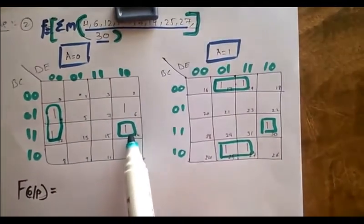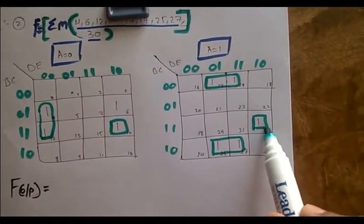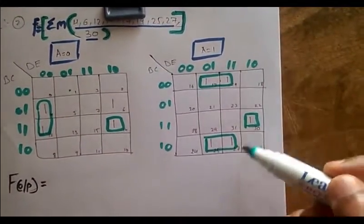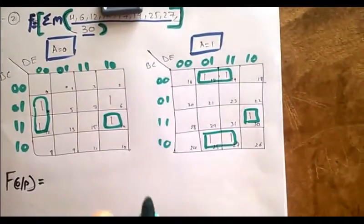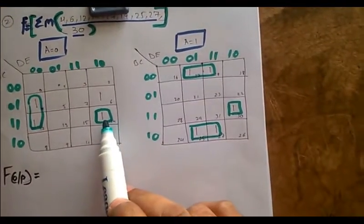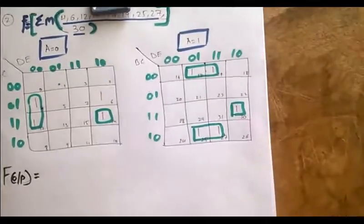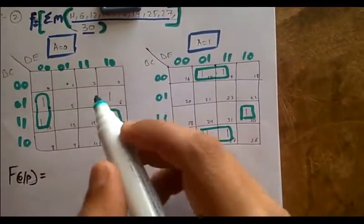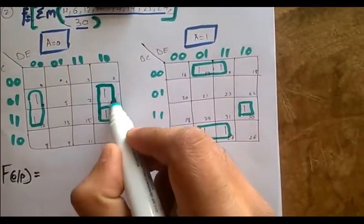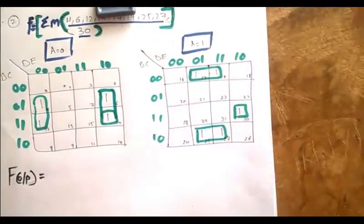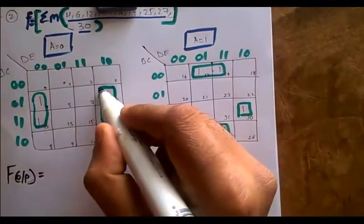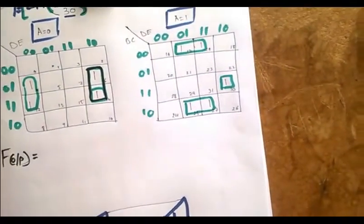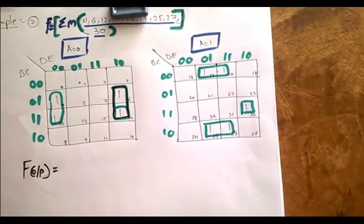See here, 14 and 30 we have paired, right? Usually what we do, we leave this and write the 5 variables as output. But the main advantage is, as it's considered as a cube, 14 and 30 are adjacent. So 14 and 30 are paired, and now remaining is 6. These two will be paired to clearly show you, these two are paired.